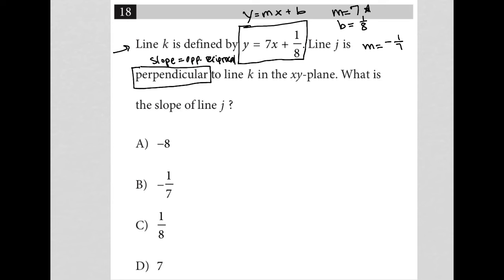Line J is perpendicular to line K in the XY plane. What is the slope of line J? We just solved that by paying close attention to every detail this question provides and understanding its significance. Our answer here is choice B, negative 1/7.